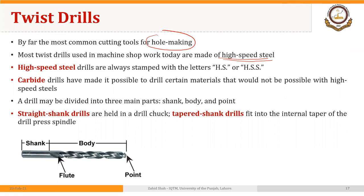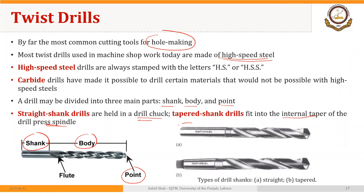A drill may be divided into three main parts: shank, body, and point. You can see here this shank could be straight or tapered. Straight shank drills are held in a drill chuck, while tapered shank drills fit into the internal taper of the drill press spindle.